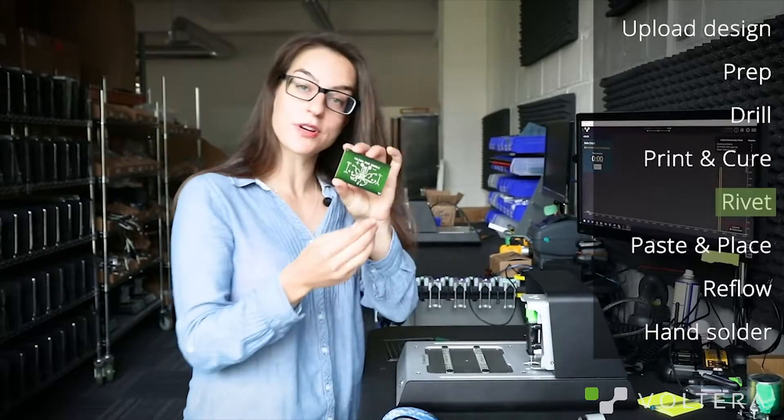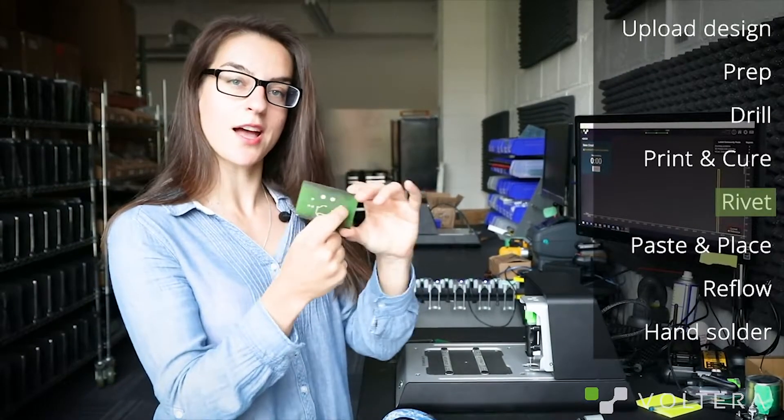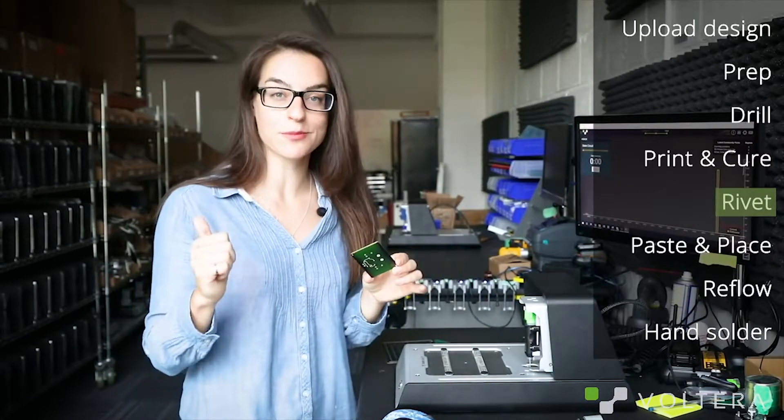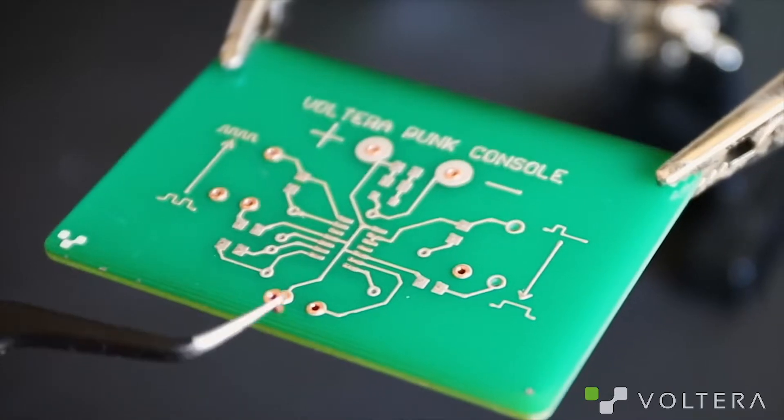Okay, so our traces are printed and cured onto both sides. Now I'm just going to go pop in some rivets and use the riveting tool to secure them into place.